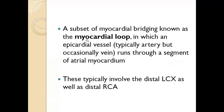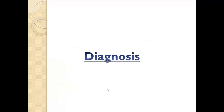There is also something called a myocardial loop. This is a form of myocardial bridging where a coronary artery is overlapped by atrial muscle rather than ventricular muscle. When atrial muscle overlies the artery, it is called a myocardial loop. These are generally asymptomatic and usually involve the distal left circumflex and the distal right coronary artery.